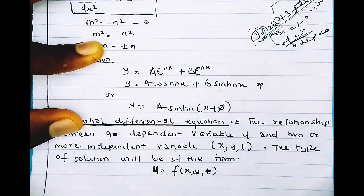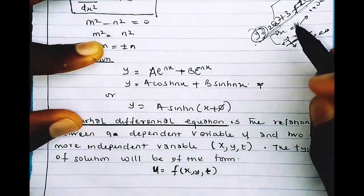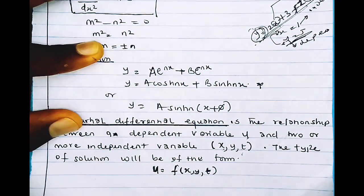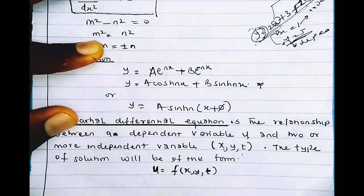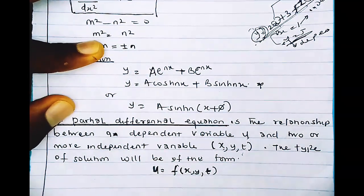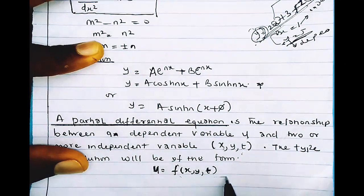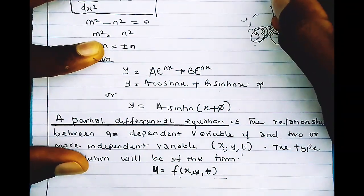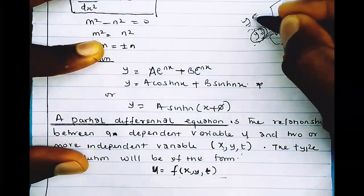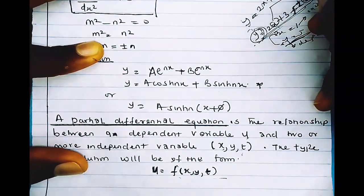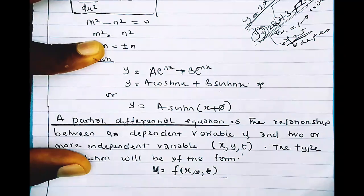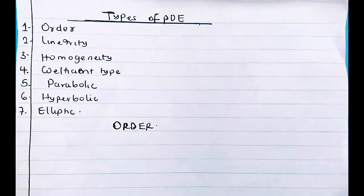This is the relationship between one dependent variable and two or more independent variables — like x, y, t, or any other letters. The solution of a PDE expresses the dependent variable as a function of the independent variables, for example y = f(2x + 3 + z).